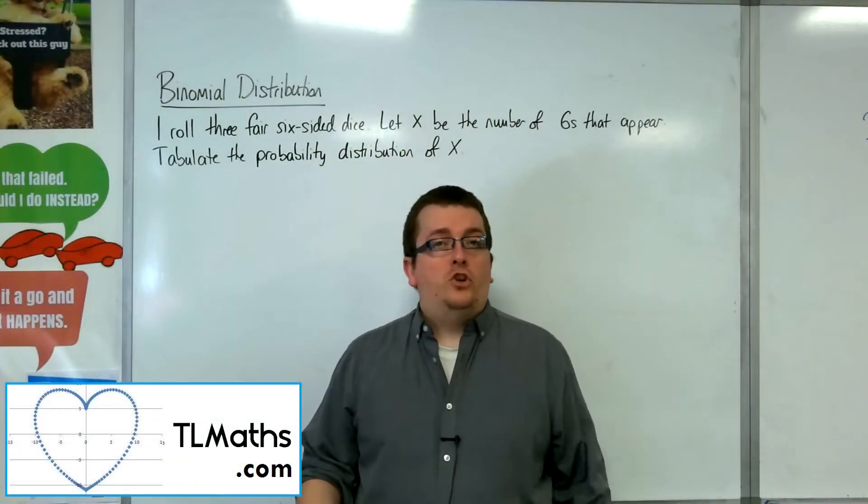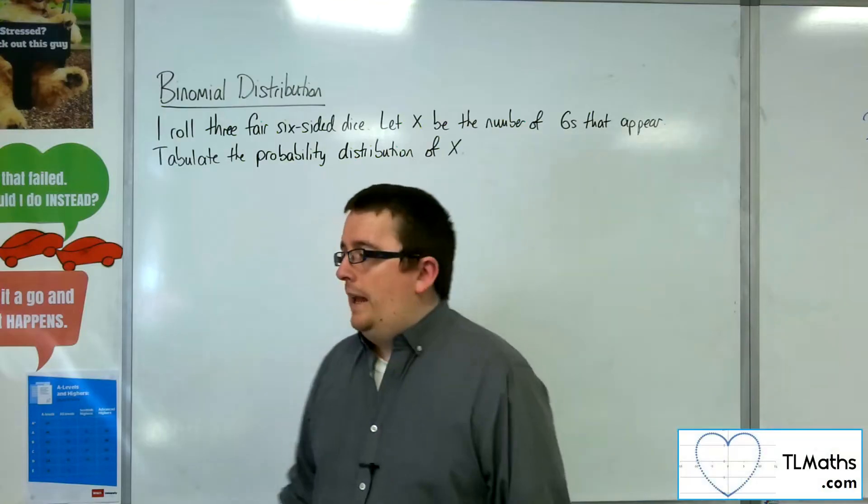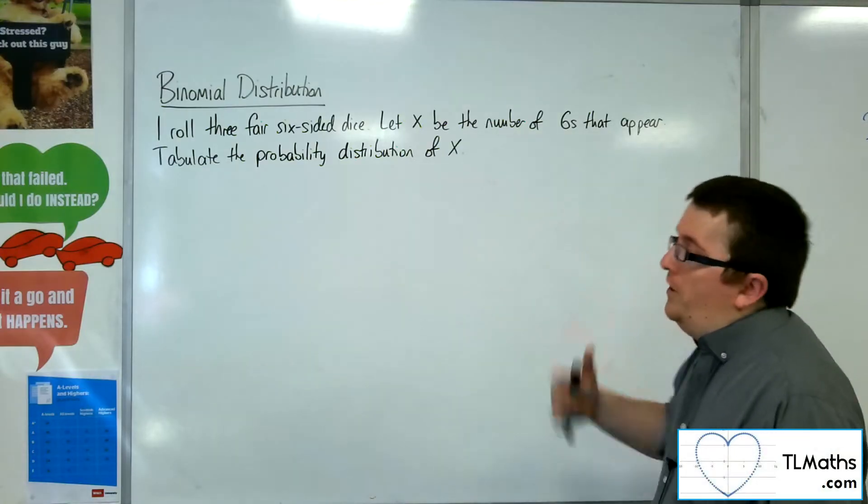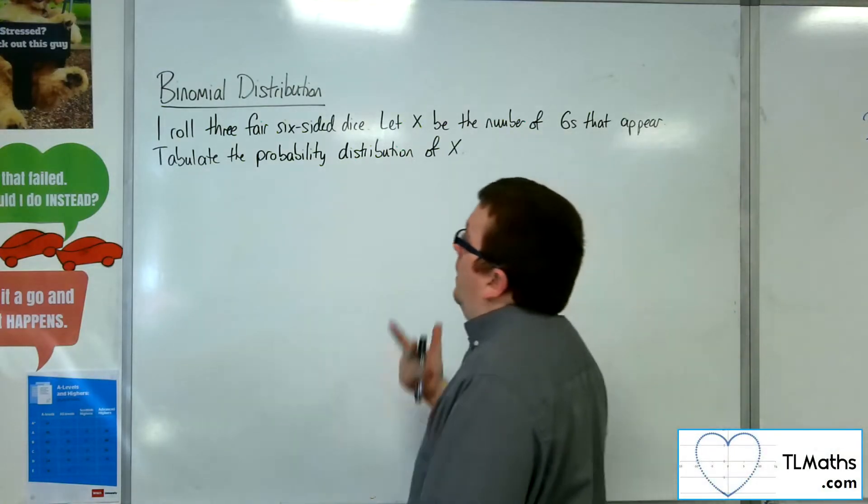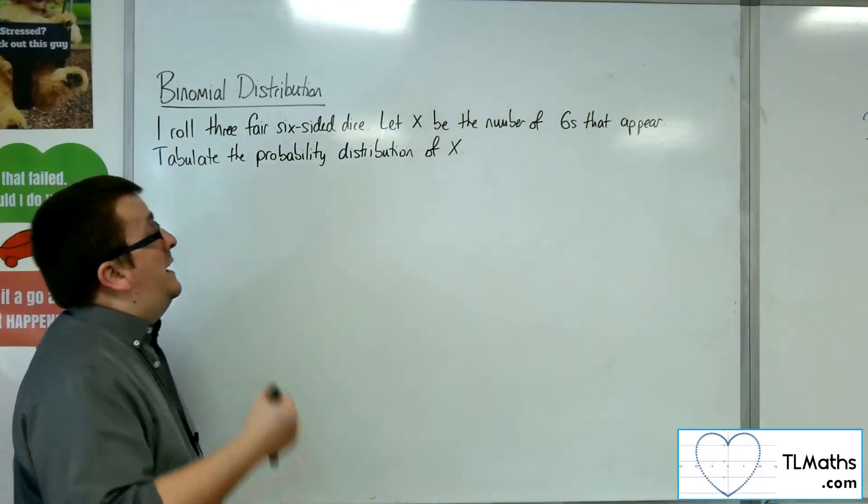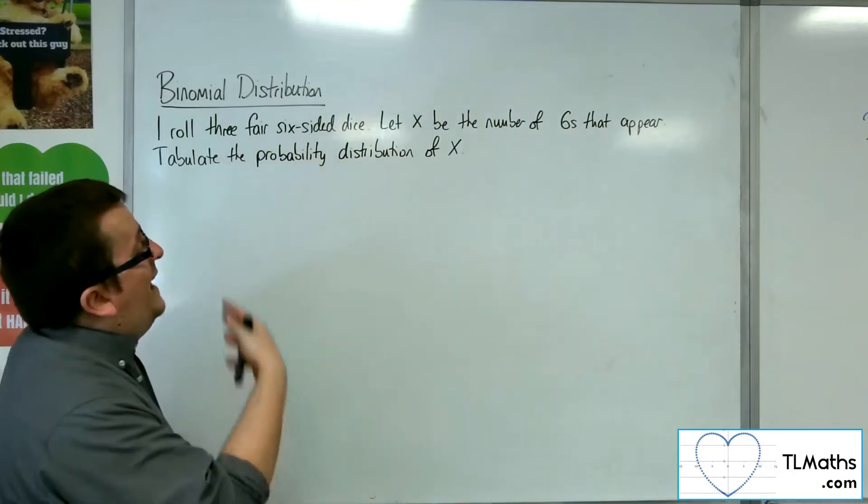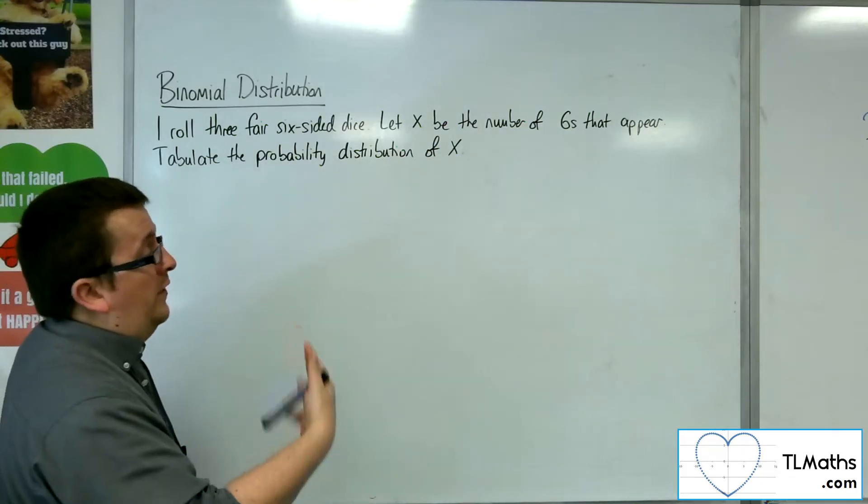Okay, in this section we're going to be looking at binomial distribution. I'm going to introduce binomial probabilities via an example. So let's say I roll three fair six-sided dice numbered from one to six, and let x be the number of sixes that appear.